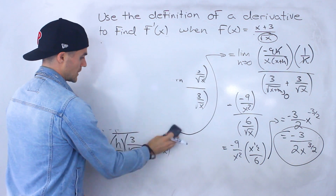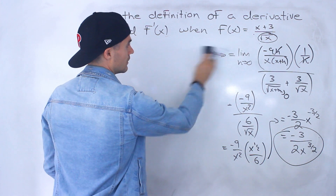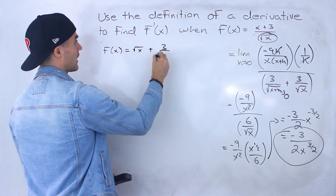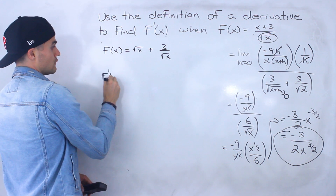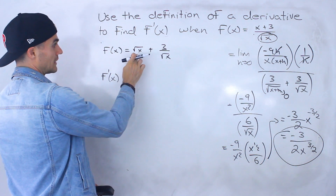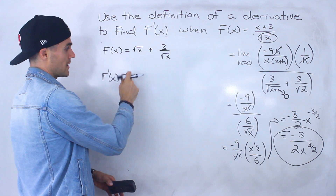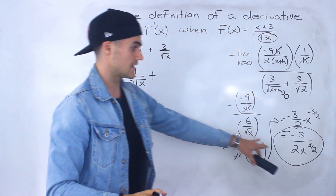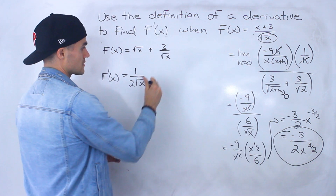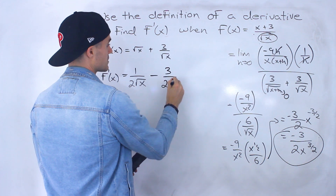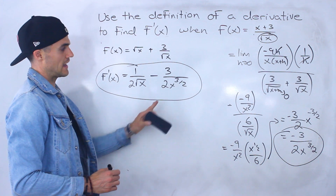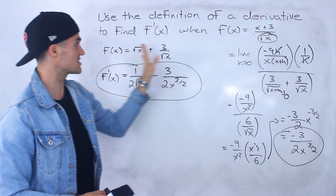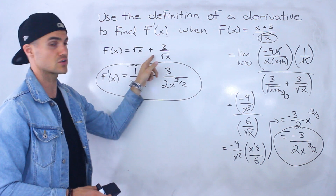Now we combine both derivatives. f of x was split into g of x which is square root of x, plus h of x which is 3 over root x. So the derivative of the entire function is g prime of x plus h prime of x, which gives 1 over 2 root x minus 3 over 2 x to the power of 3 over 2. That is the final derivative. We took the function, split it into two separate functions, found the derivative of each separately, and then added those derivatives at the end.